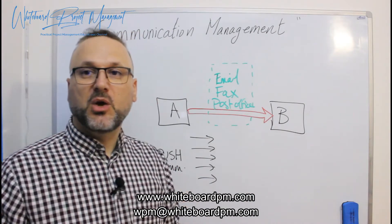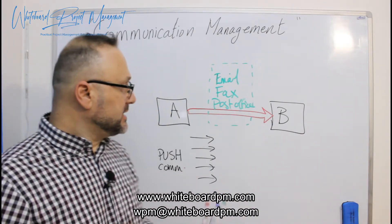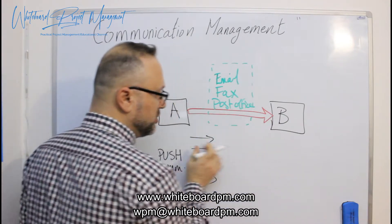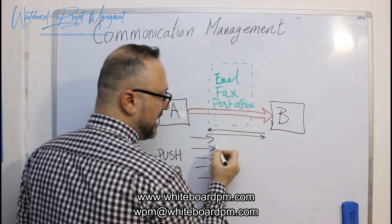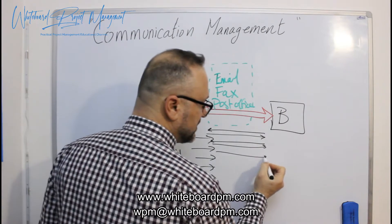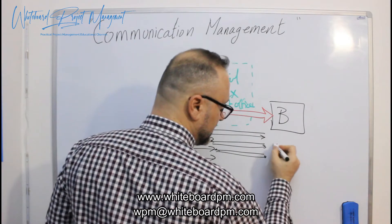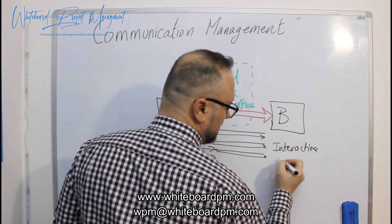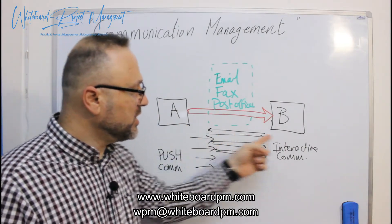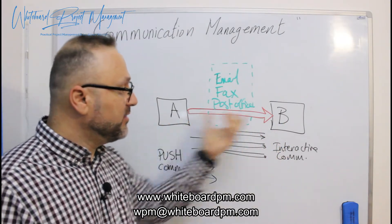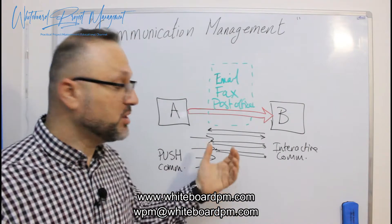The other way: as a project manager (Person A), Person B replies and communicates back for each task or to-do you send. For each email you send, he replies, generating another loop of emails regarding the same task. This is the interactive communication — for each task, you are generating many emails between Person A and B. Both persons are communicating about the same task. This is a very effective way of communication because you are sharing information.